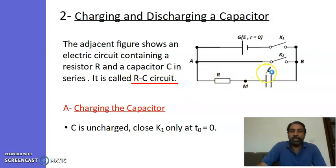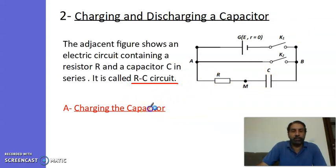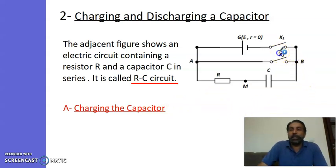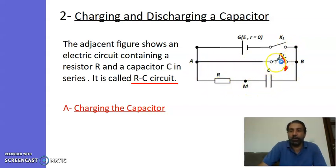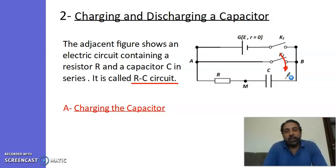It is called an RC circuit because there is a resistor and a capacitor. Case one: charging the capacitor. Let's first close switch K2 only while K1 is still open. What will happen? Nothing — because there is no generator in the circuit and the capacitor is neutral.